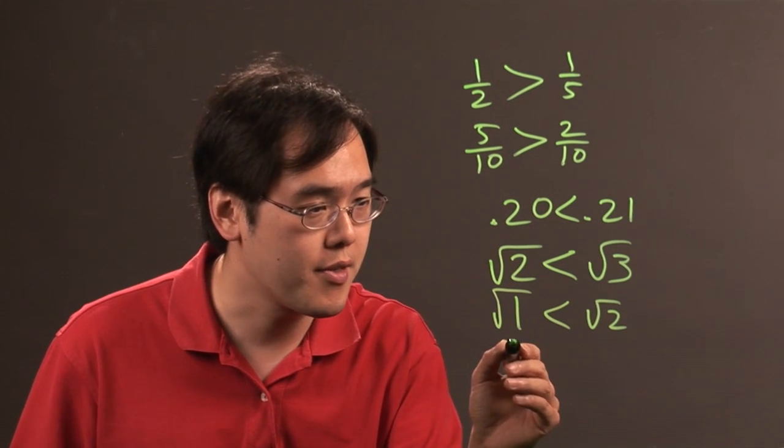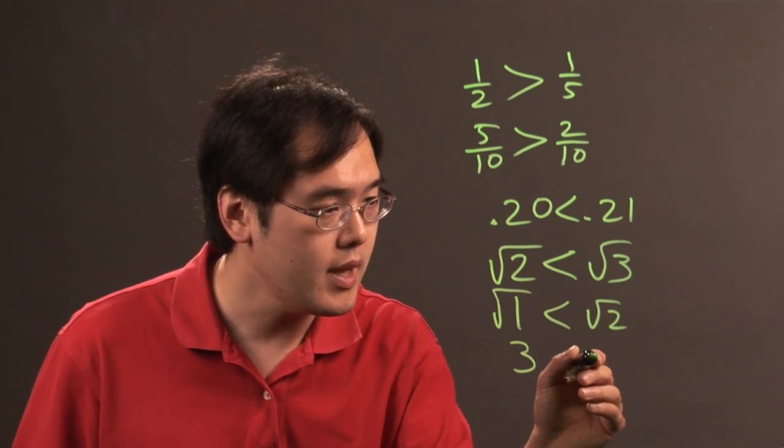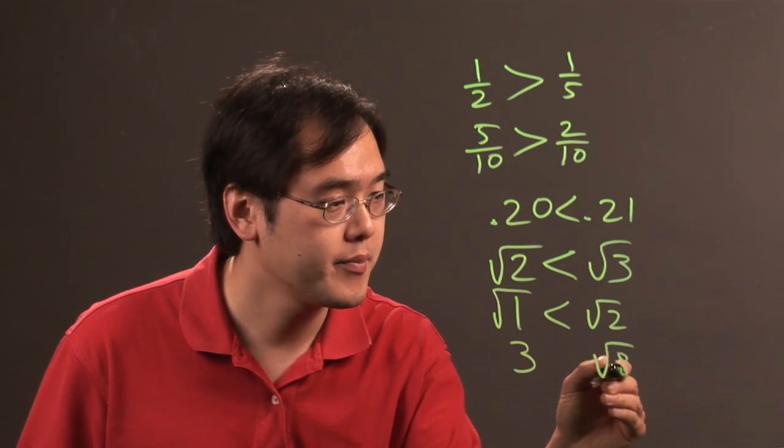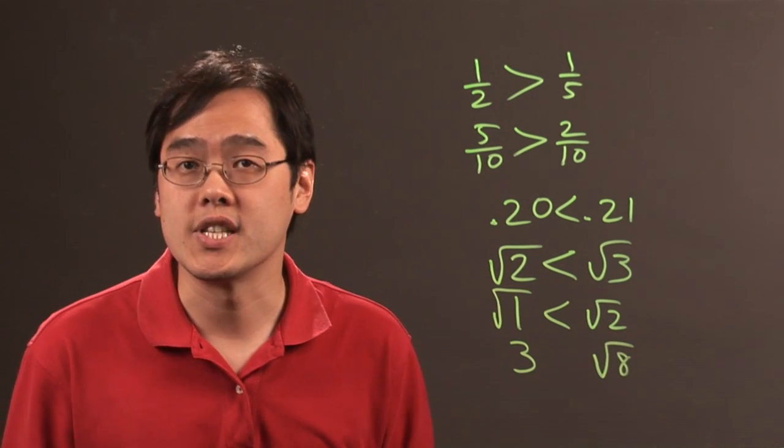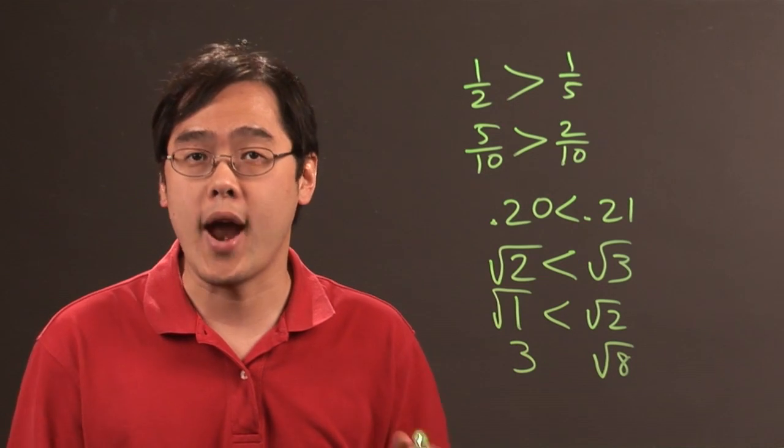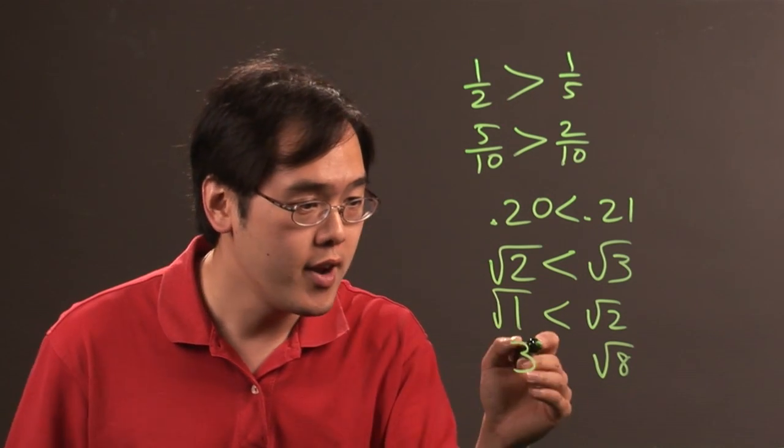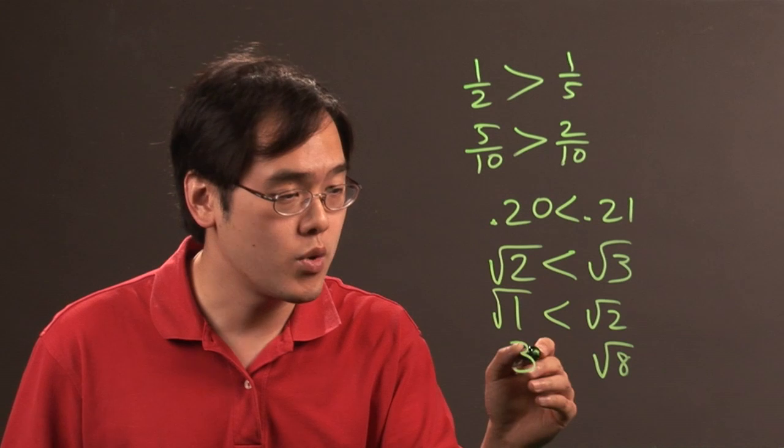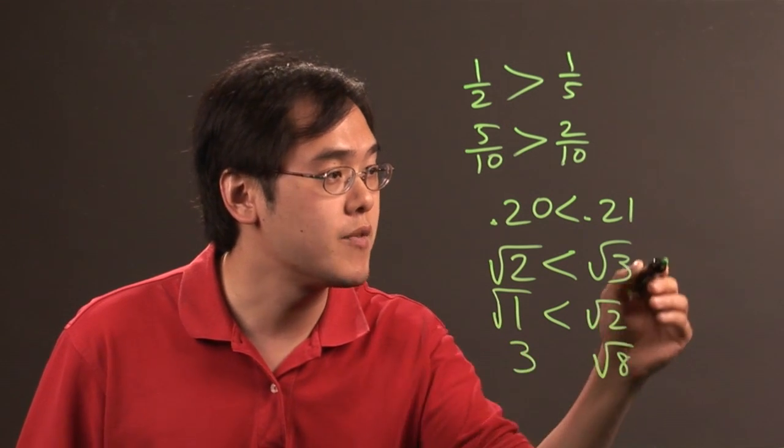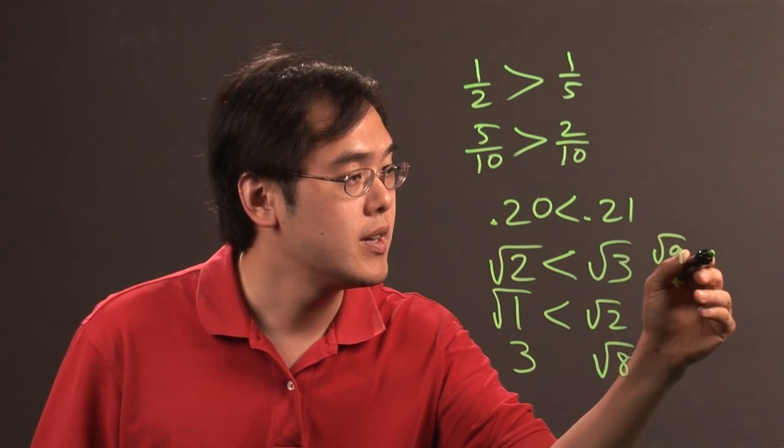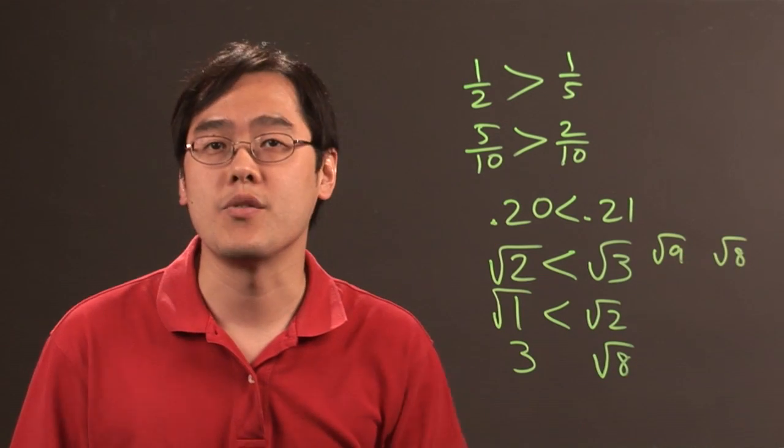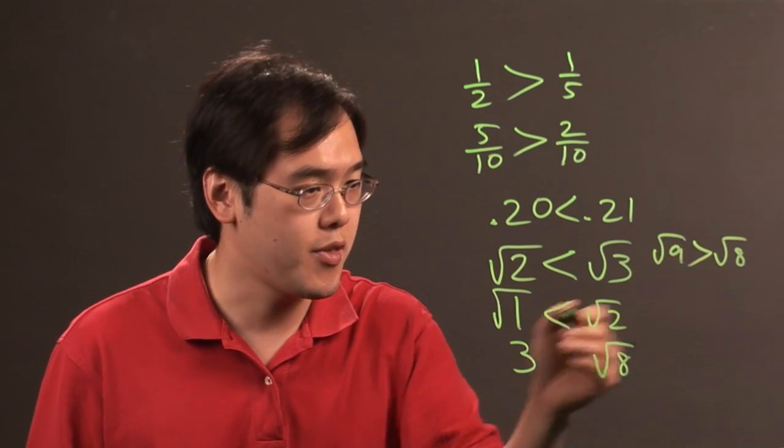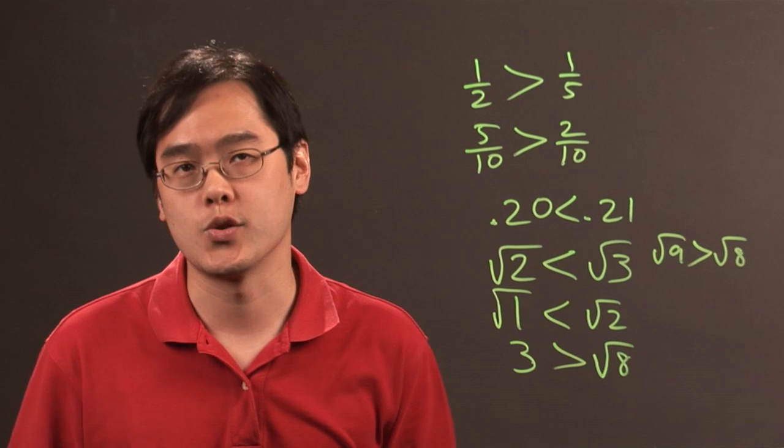Same thing if you have something like three and let's just say square root of eight. Now, as strange as this sounds, you can rewrite three as a radical and then do the proper comparison there. Three is square root of nine, so if you have square root of nine compared to square root of eight, as you can tell, nine is bigger than eight, so that's why three is larger than square root of eight.